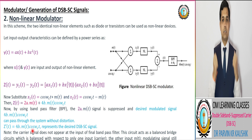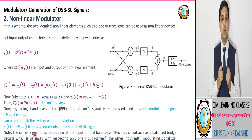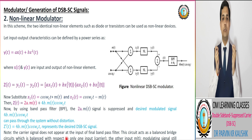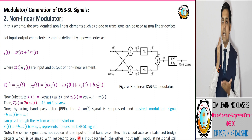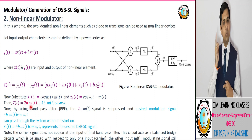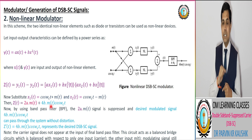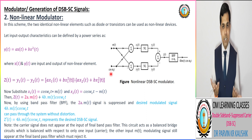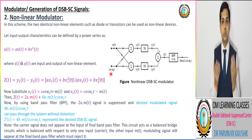As per conclusion, this modulator circuit acts as a balanced bridge modulator that is balanced with respect to one input — your carrier signal. Because at the input of the band pass filter, the term corresponding to the carrier signal is absent. So it is balanced with respect to one input, and it is also known as the single balanced modulator or balanced bridge modulator.